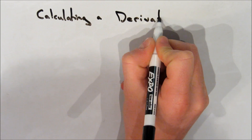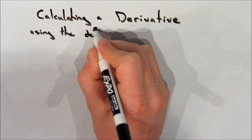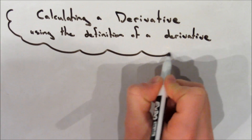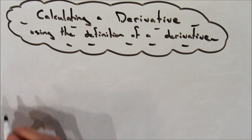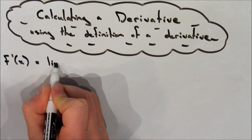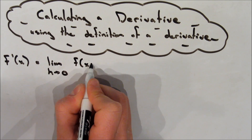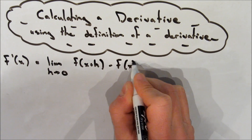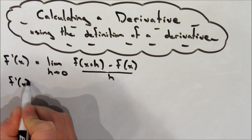Today we're going to talk about calculating a derivative using the definition of a derivative. In my last video I talked about where we get this definition from, and that's this formula here: f prime of x is equal to the limit as h approaches 0 of f of x plus h minus f of x, all over h.